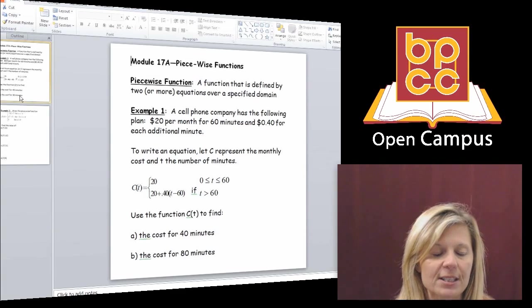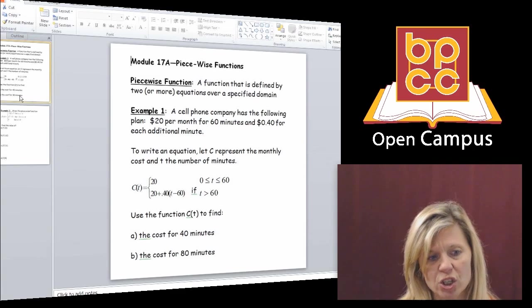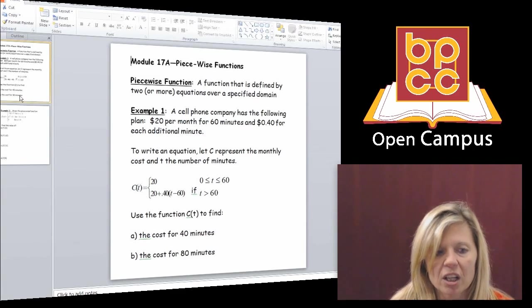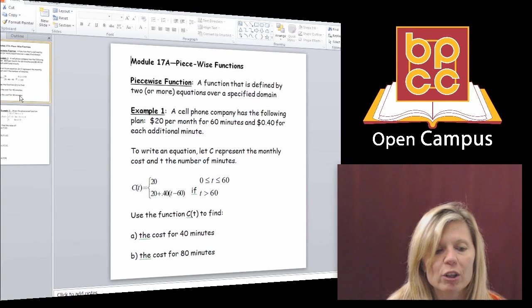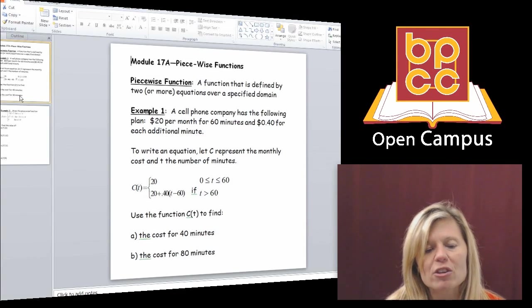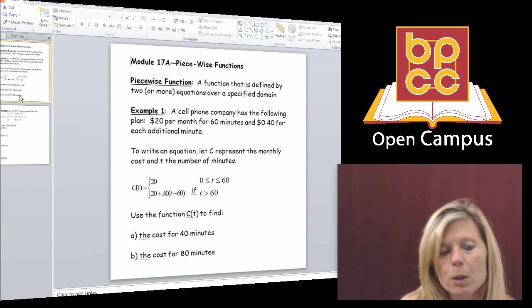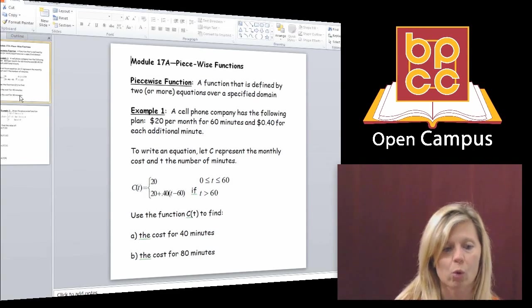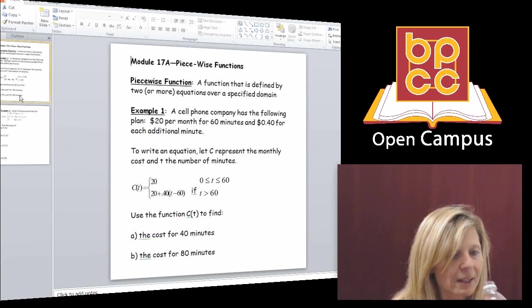If you look down at my first example, do you all see c of t? Well, c of t is function notation. Again, we're not using that f of x, but it's still a function notation. And if you look, it says equals, and then there's two pieces. There's one on top of each other. So that's what a piecewise function is. It's a function notation that relates to more than one equation.